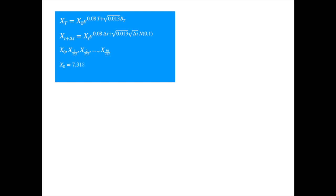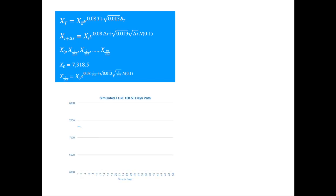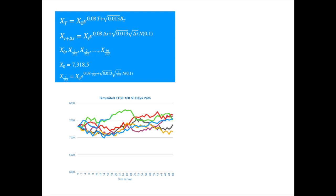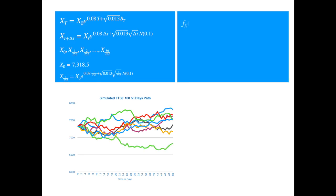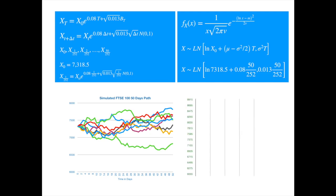We start with 7318.5, which was the latest value of the index. We then generate a random value of the standard normal and plug it into the equation to get the simulated value one day ahead. We keep recursively generating the values of the process one day at a time until we reach our desired maturity, which we choose to be 50 days. Here are a few sample paths.